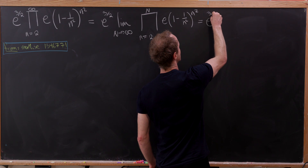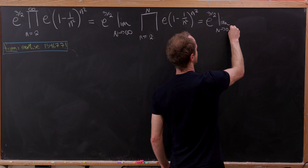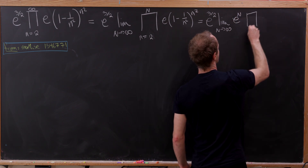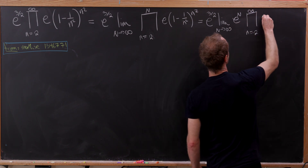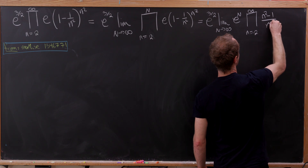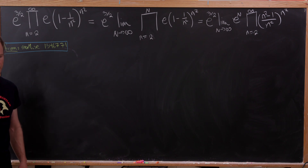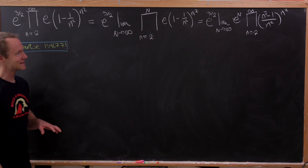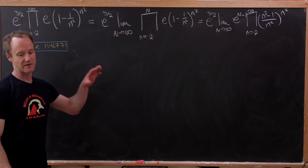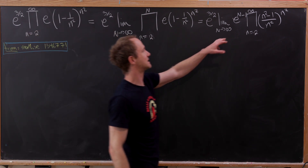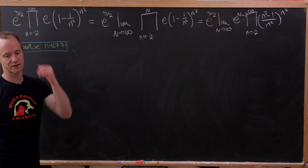So this is e to the three halves, and then we have the limit as N goes to infinity of e to the capital N, and then the product as n goes from 2 up to infinity of n squared minus 1 over n squared, all raised to the n squared — just by putting what's in the parentheses together. Next, we fix this typo: it should be e to the n minus 1. Then we factor an e to the minus 1 out, leaving e to the n, and we factor the difference of squares in n squared minus 1.